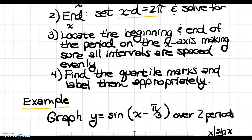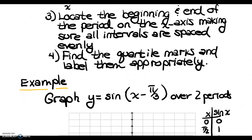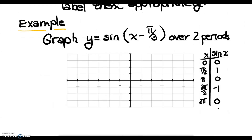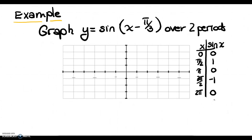Once you find the beginning and the end, you locate them on the x-axis, making sure all intervals are spaced evenly. It's a little more difficult with horizontal shifts, but I'll show you how. Then find the quartile marks and label them appropriately. We're going to walk through this first example and take it slow. They're asking us to graph y equals sine of x minus pi over 3 over two periods.